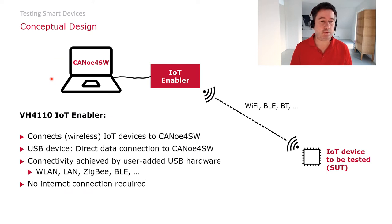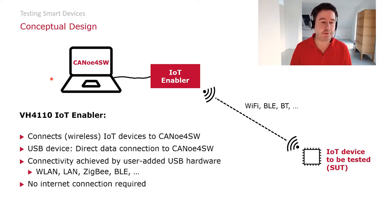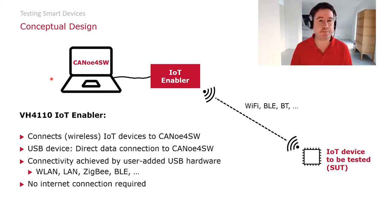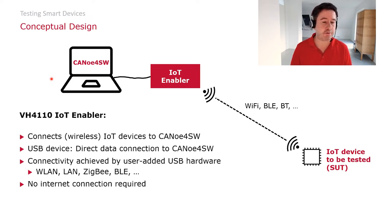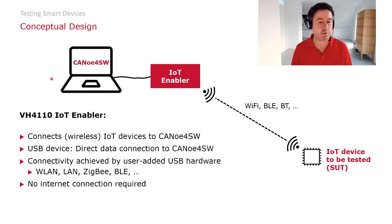Let's take a look at the conceptual design of the IoT Enabler. As mentioned, the IoT Enabler connects to Canoo for software via a normal USB connection. Connectivity is achieved by adding USB hardware to the IoT Enabler. For example, you can attach a Wi-Fi stick, a ZigBee stick, a Bluetooth Low Energy stick, and so on. So there is no internet connection required at all — you can directly connect to your system under test using the IoT Enabler and Canoo for software.